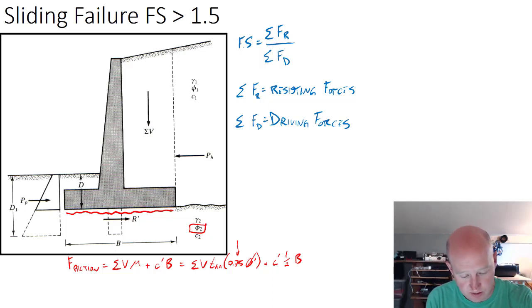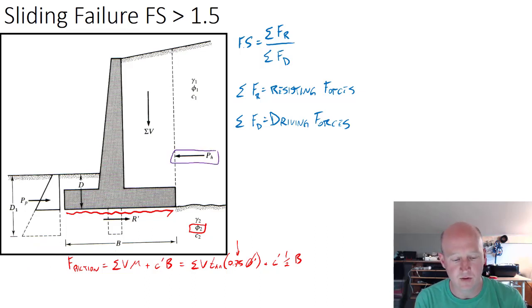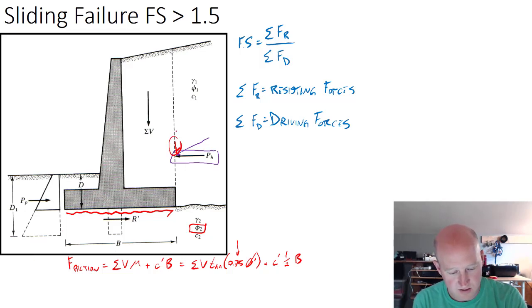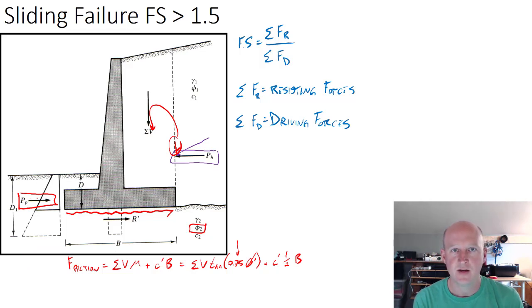We have the friction along the bottom that's going to resist, and then we've got just the horizontal component of the resultant. If our real resultant looked something like this because it's inclined, the vertical part is going to be lumped into the sum of vertical forces, so we're just looking at the horizontal forces now. The horizontal driving component is just the active material, and then potentially we would have a passive force also resisting. It will be up to us to decide whether or not we want to count that because there may be a case where someone comes along and excavates at the toe of the footing.